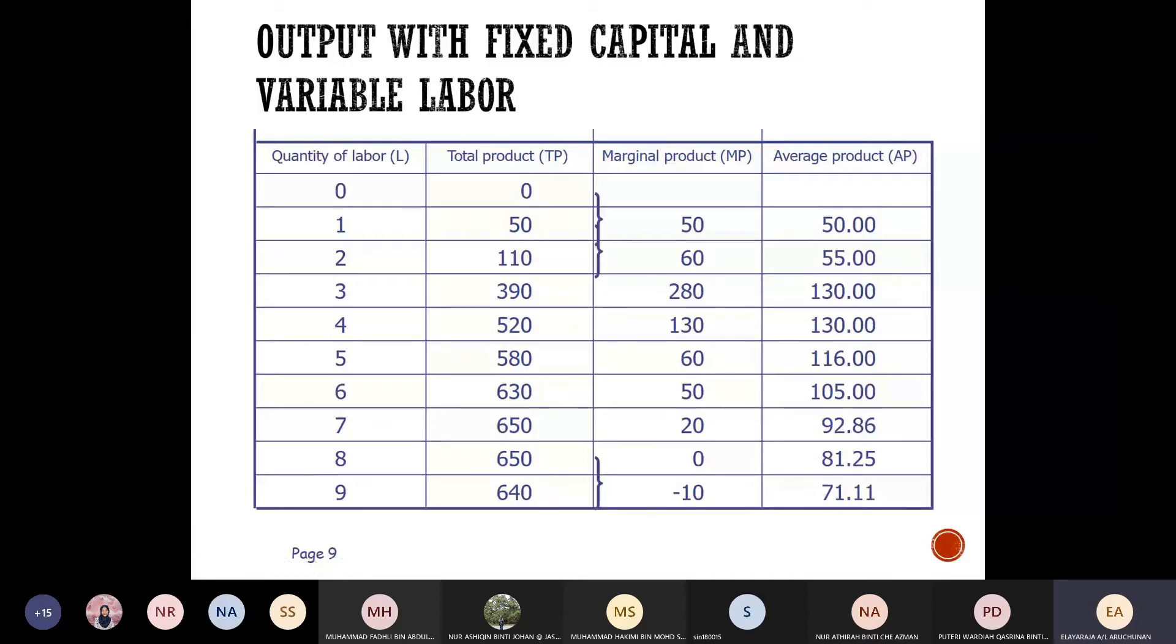All right, now let's see how this works. Now say this is a table with quantity of labor, and then total product TP and marginal product MP, and then the average product AP.